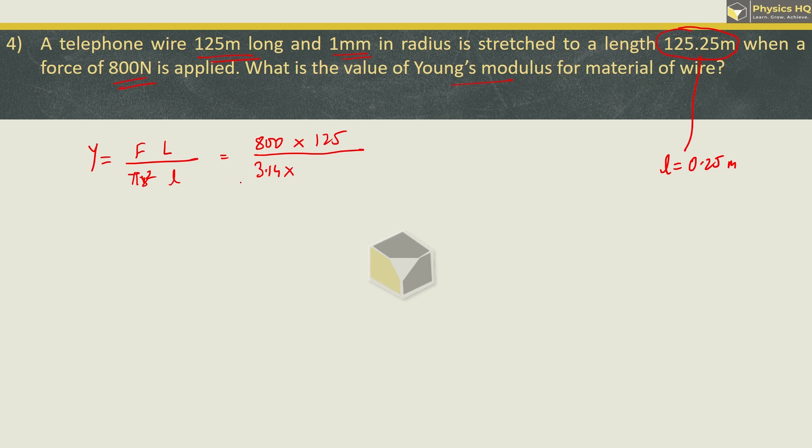Length is 125 divided by pi which is 3.14. Radius is 1 mm, which is 10^-3 meter, 10^-3 squared. Small l is 0.25 meter, which is 25 × 10^-2. 25 into 5 is 125. Then we got 8 into 40 divided by 3.14 × 10^-3 squared is -6, and this -2 is 10^-8.